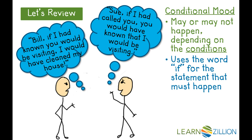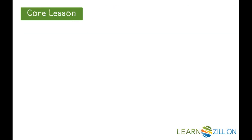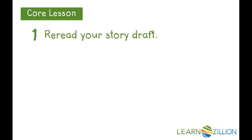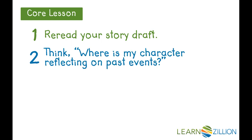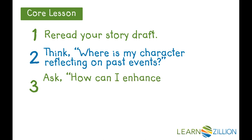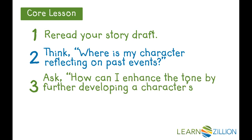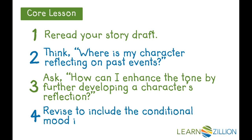We can use the conditional mood in a narrative in order to enhance a character's reflection. A great place to use the conditional mood is when a character is wishing she would have made a different decision. The character can reflect upon that decision and what would have happened if she had made a different choice. The steps are: first, reread your story draft; next, think about where your character is reflecting on past events; then ask how you can enhance the tone by further developing the character's reflection; and finally, revise to include the conditional mood.